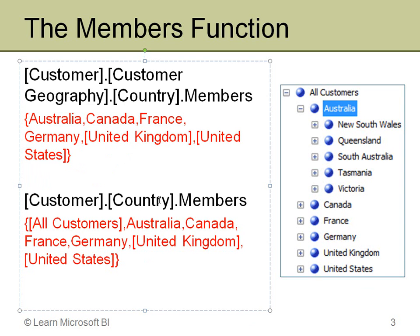Below that example, I have just customer.country.members. Country is a level in the multi-level hierarchy, but it's also an attribute by itself. So in this case it takes the attribute hierarchy and returns all of the countries — but you also get all customers at the top, which is the all level of that attribute hierarchy. By default, unless you've turned off the all level, any attribute hierarchy will have all as the first member.